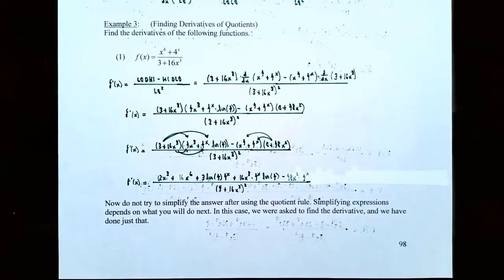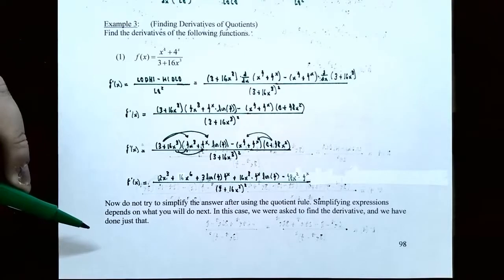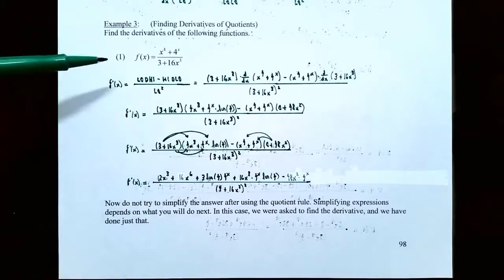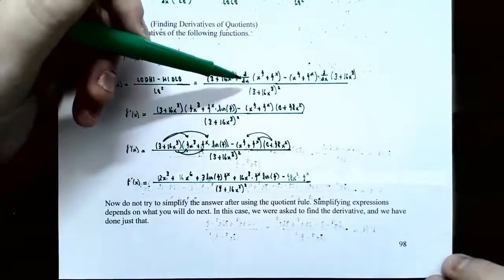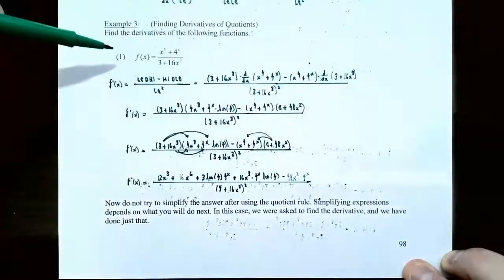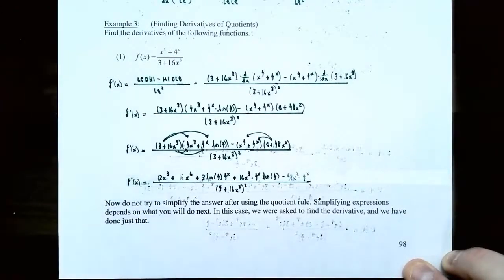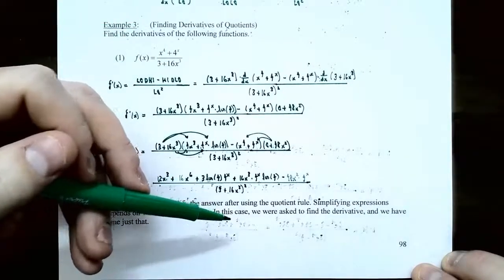One important note: you do not need to simplify the answer for the derivative after using the quotient rule. Simplifying depends on what you're going to do next. Since the problem asked us to find the derivative, we found it. We used the quotient rule to set up the derivative, found the derivative of high and low, and could have stopped there — that is f prime of x. The extra simplification using FOIL and distributing is optional depending on what the question asks.